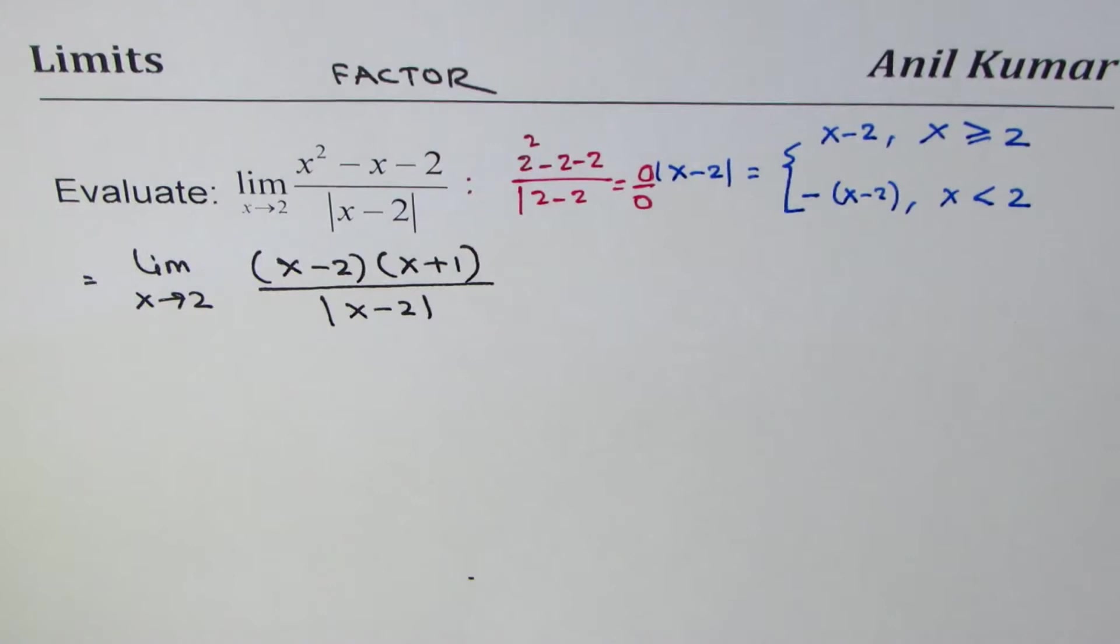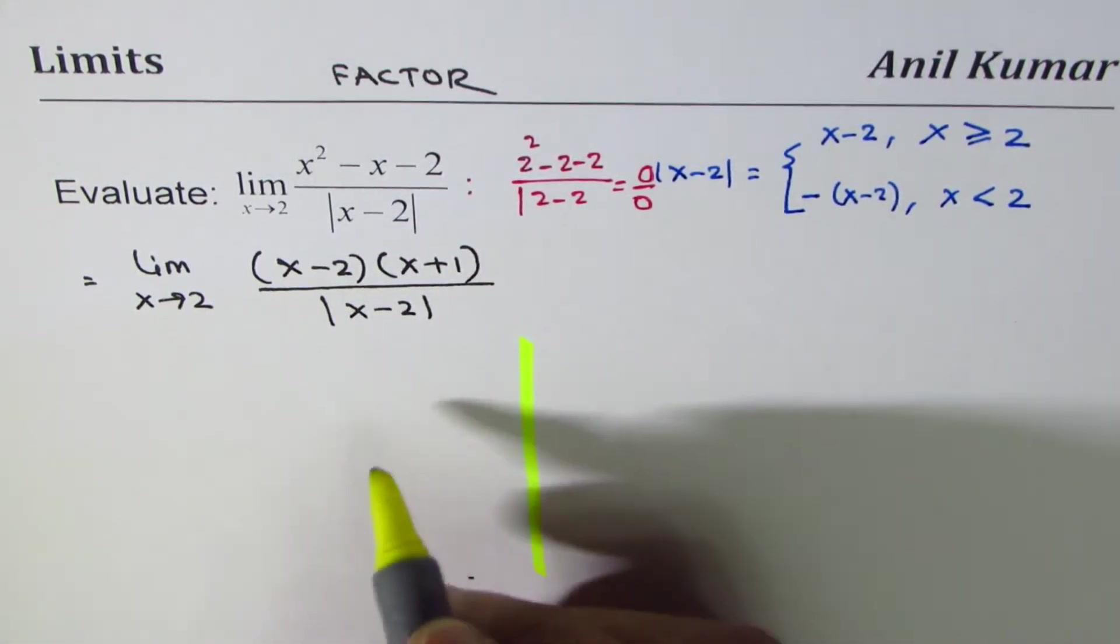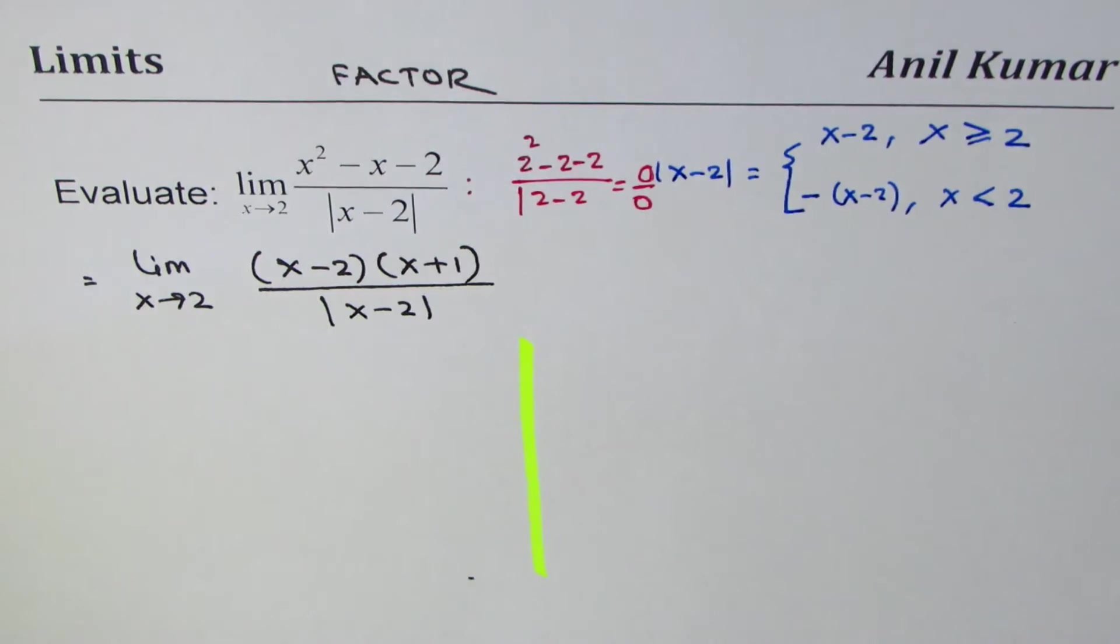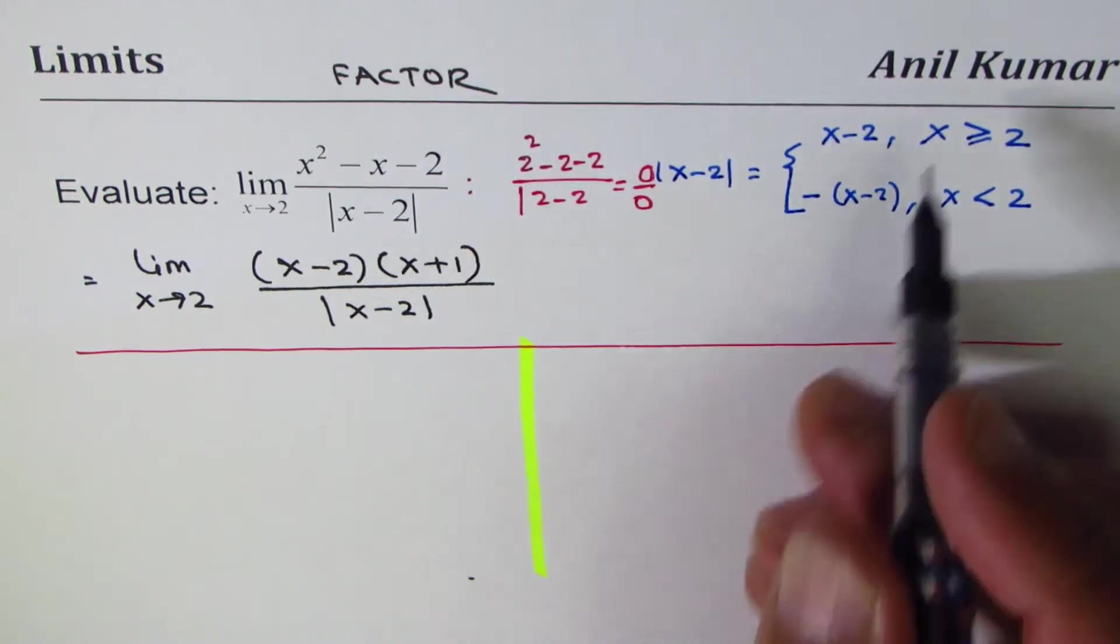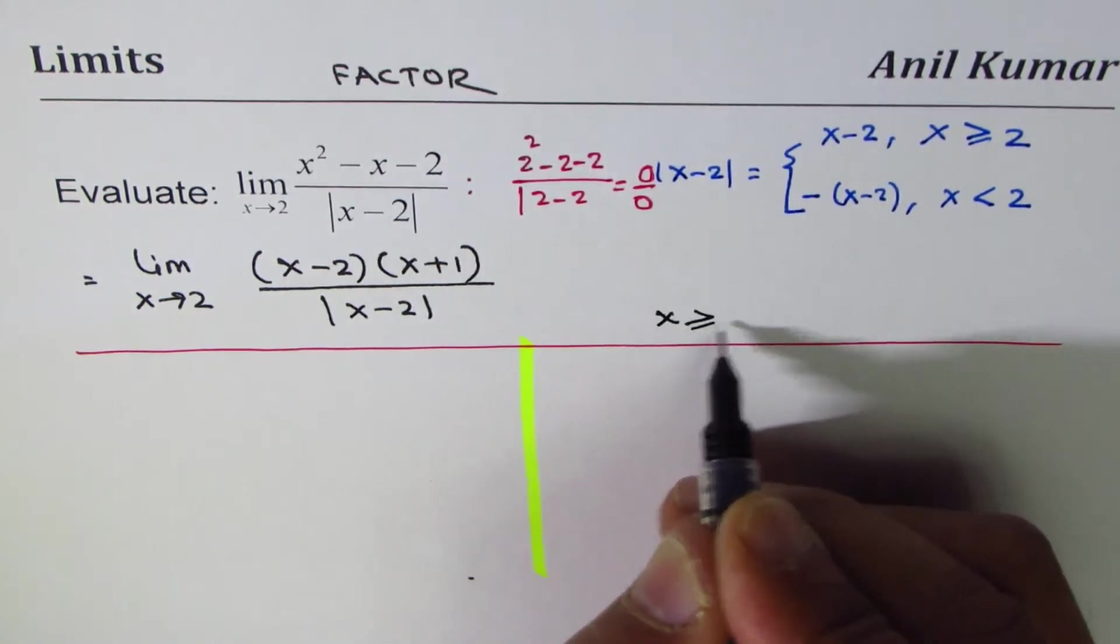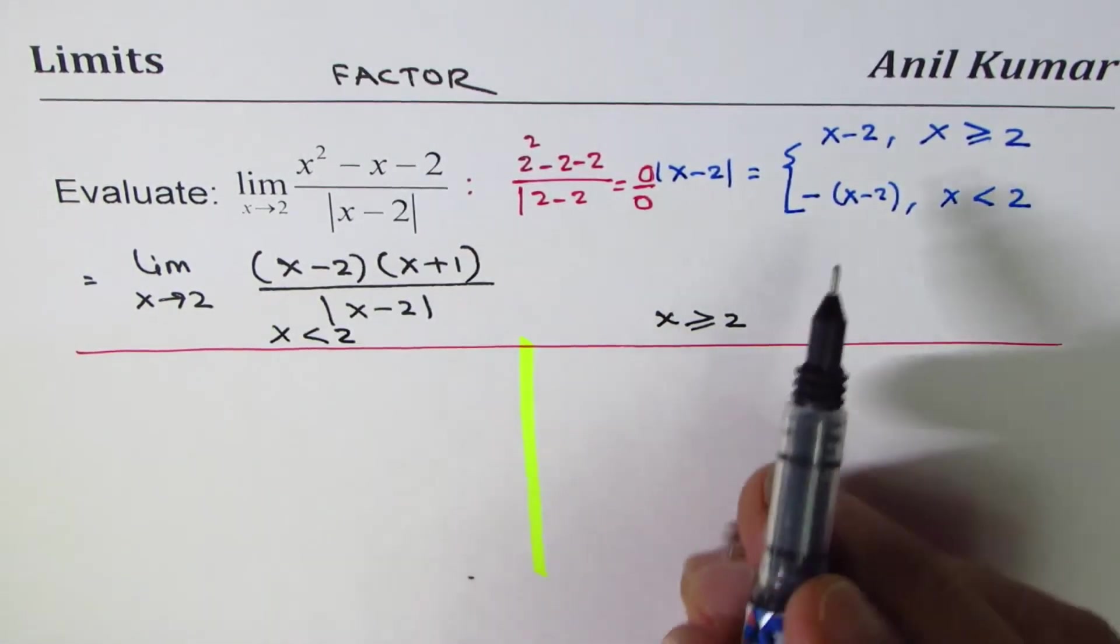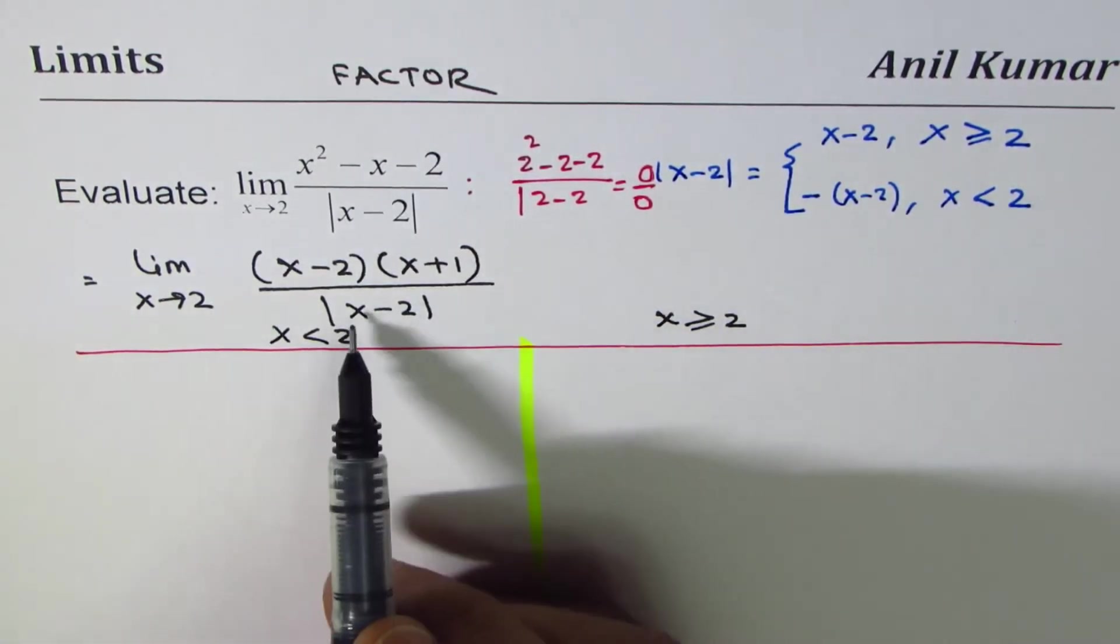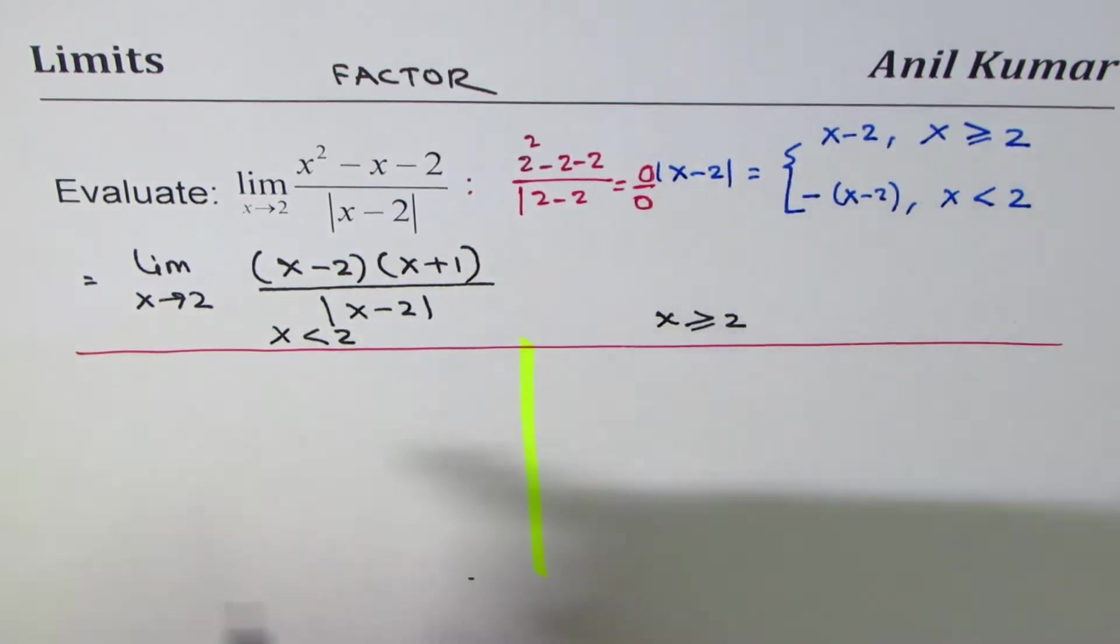Since x minus 2 is a piecewise function, we'll solve this limit in two different pieces: one when x is greater than or equal to 2, and the other when x is less than 2. If x is less than 2, absolute value of x minus 2 will be written as negative x minus 2.